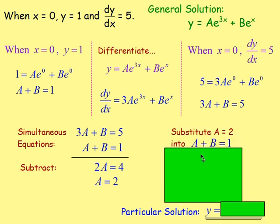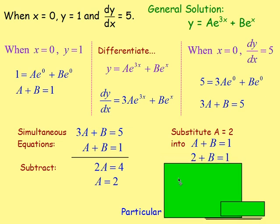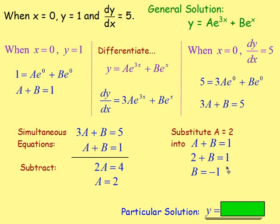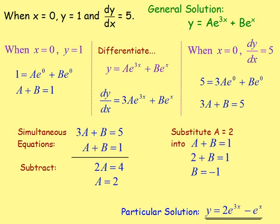Once we know a is 2, we substitute into one of our equations. Using a + b = 1: if a is 2, then 2 + b = 1, so b = −1. The particular solution is found by rewriting the general solution, replacing a and b with what we found: y = 2e^(3x) − e^(x). And that is your particular solution.